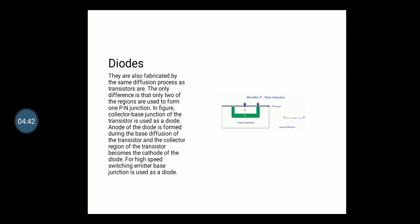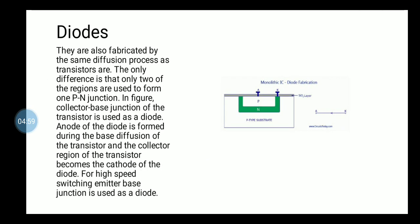These diodes are also fabricated by the same diffusion process as that of the transistors. The only difference is that only two of the regions are used to form the p-n junction, while the collector base junction of the transistor is used as diode.